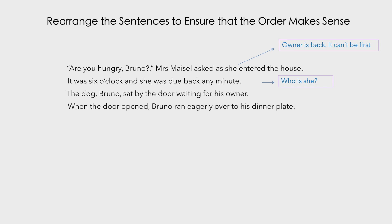The third sentence: 'The dog Bruno sat by the door waiting for his owner.' This is a clear introduction because we've got the dog Bruno and the fact that he's sitting by the door waiting for his owner. So this sentence could well be first. Then the last one — 'When the door opened Bruno ran eagerly over to his dinner plate' — does suggest a previous action.